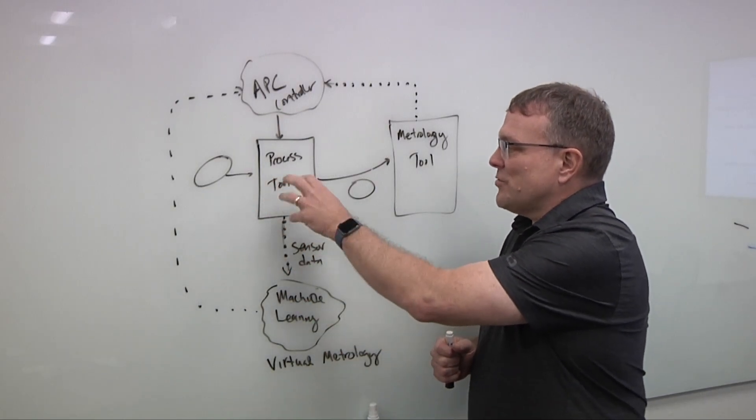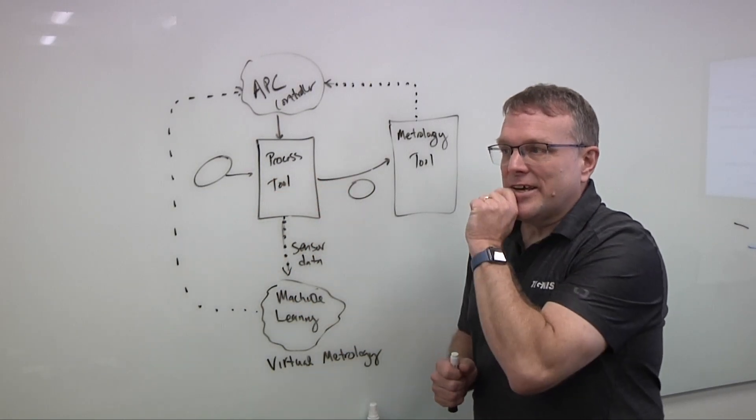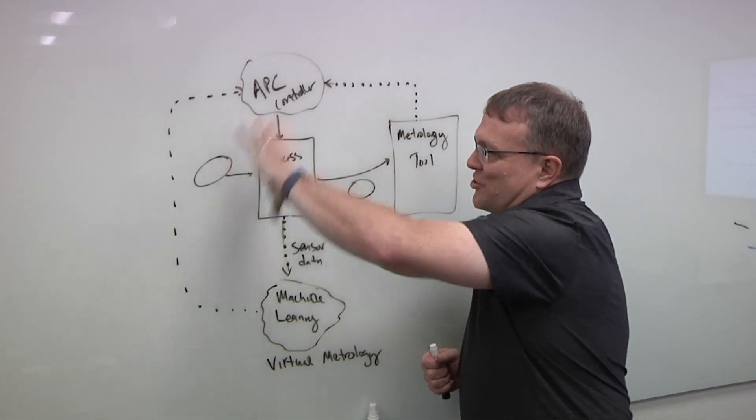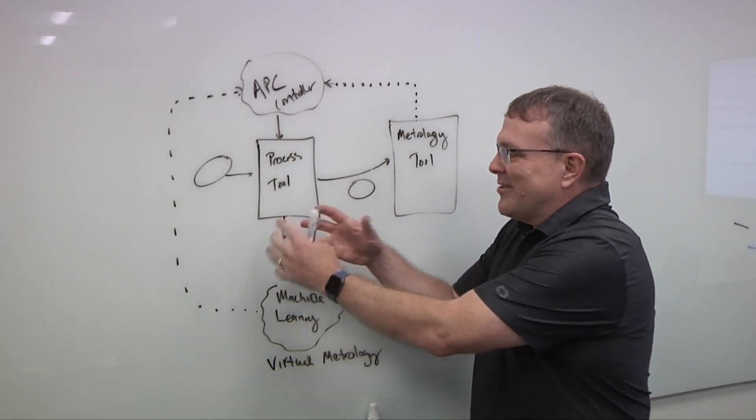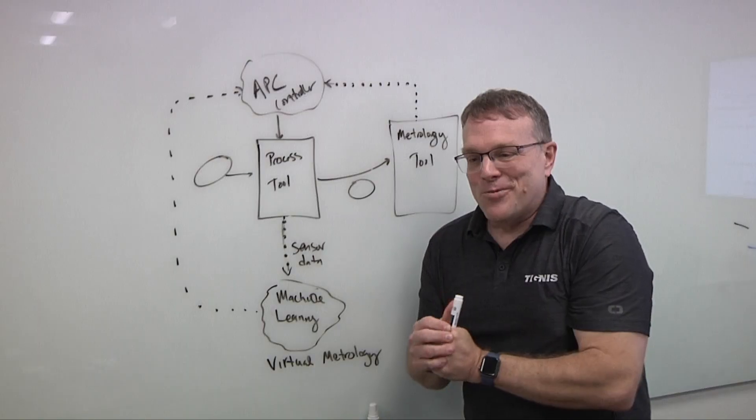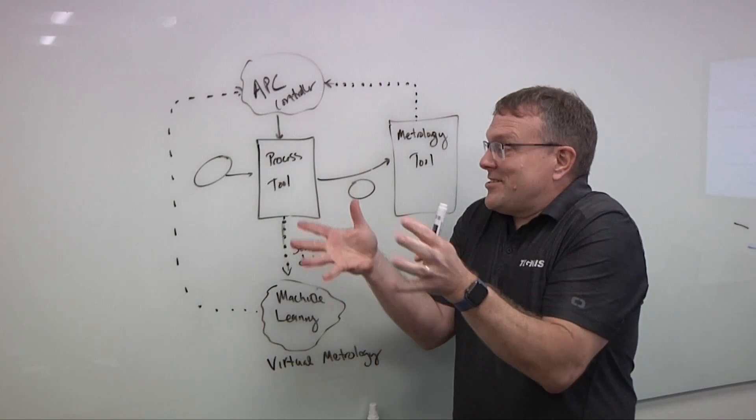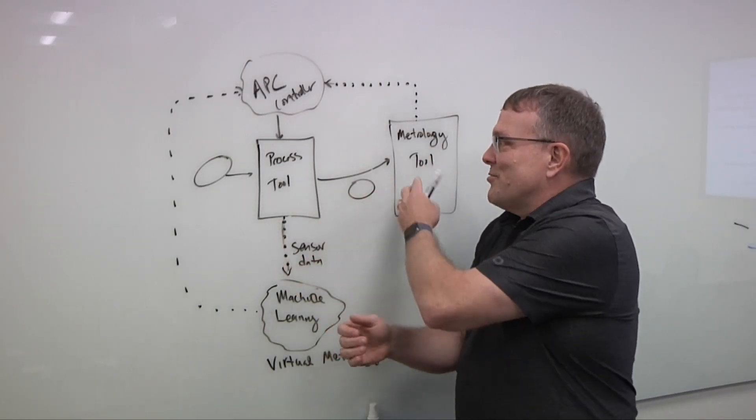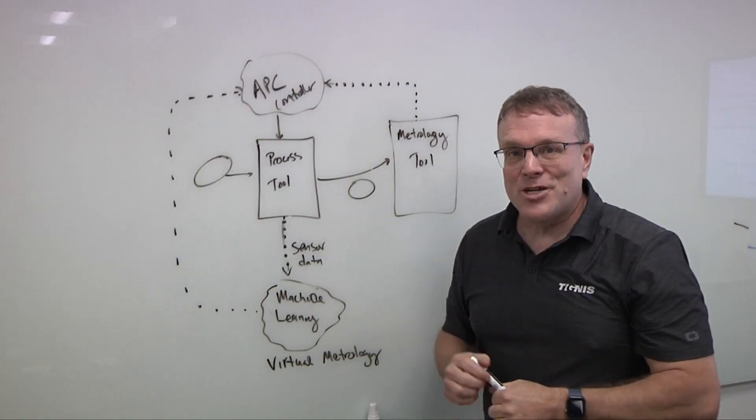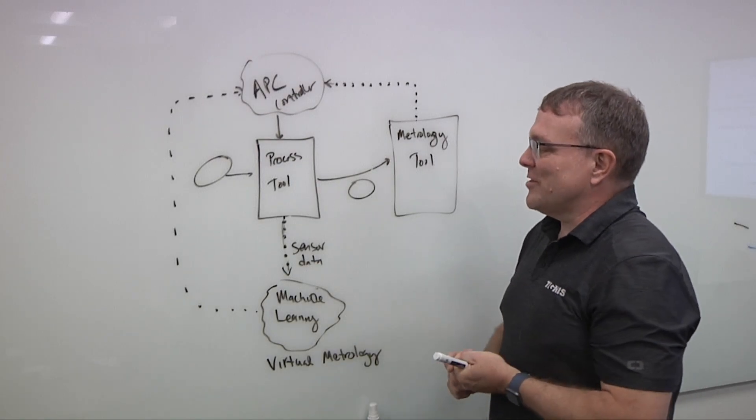So the whole dream of virtual metrology is to say, well, we got all these sensors on this tool here, like all sorts of sensors. Surely with all this sensing, we can detect, hey, this is different in this way, which means it's going to lead to this difference in measurement. That's the dream of virtual metrology.